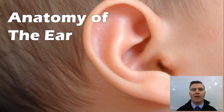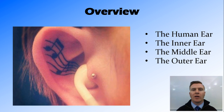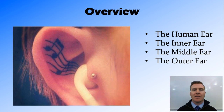Hi guys, in this video we're going to look at the anatomy of the ear. We're going to talk briefly about the human ear and the three divisions that it has — the inner, middle and outer ear — and then we'll look at those divisions in more detail and the parts of them.